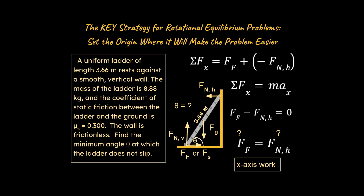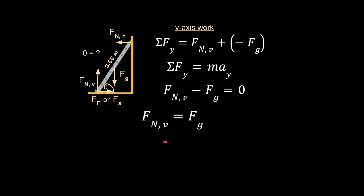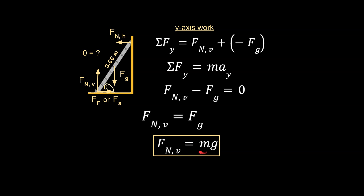Next, the sum of the forces in the y-axis. We add up the forces in y; the second line is f equals ma, which equals zero here. Setting them equal, we prove the vertical normal force equals gravity: fn,vertical equals mg. We were given the mass of the ladder, but it's actually easier to not plug in numbers until the end because a lot of things will cancel out. So hold off plugging in any numbers until the end — that's usually good practice anyway.